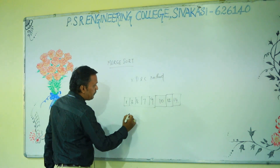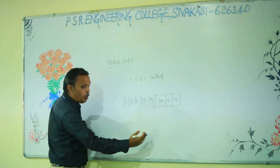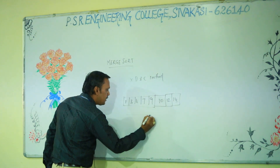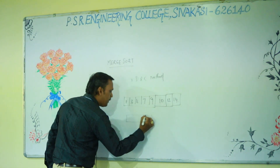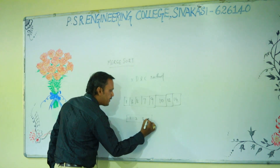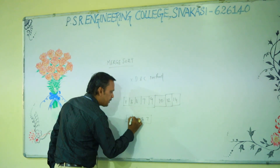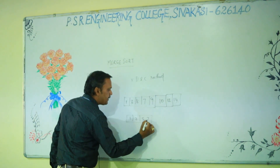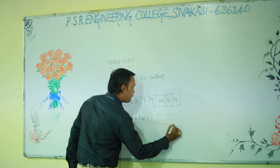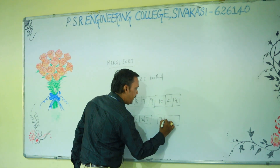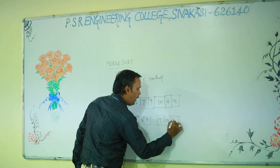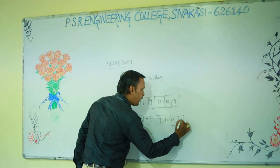Now we are splitting it into two halves. First of all, we split into two halves. The first half has 1, 3, 8, 7. The second half has 9, 10, 12, 14.